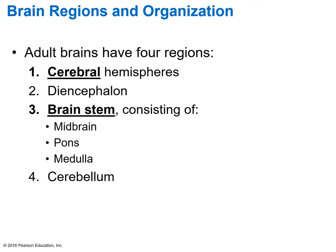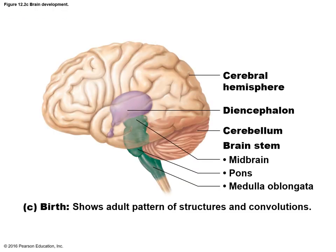The adult brain is divided into four regions: the cerebrum, the diencephalon, the brain stem, and the cerebellum. The brain stem and diencephalon have smaller components within them. The majority of brain mass is the cerebrum, divided into two cerebral hemispheres. The brain stem is divided into the midbrain, the pons, and the medulla oblongata, with the cerebellum below that.